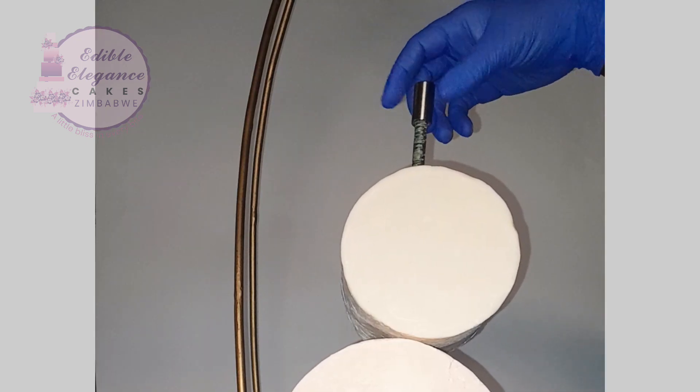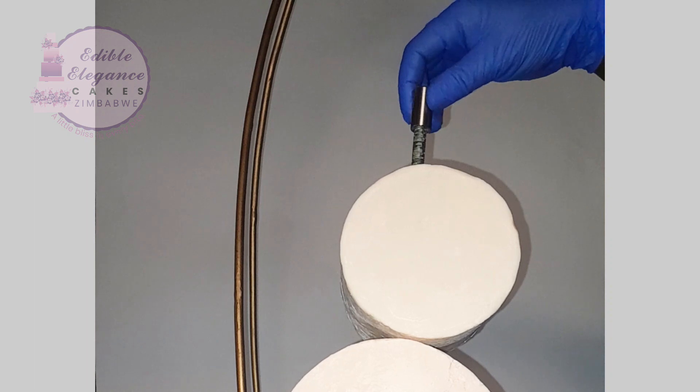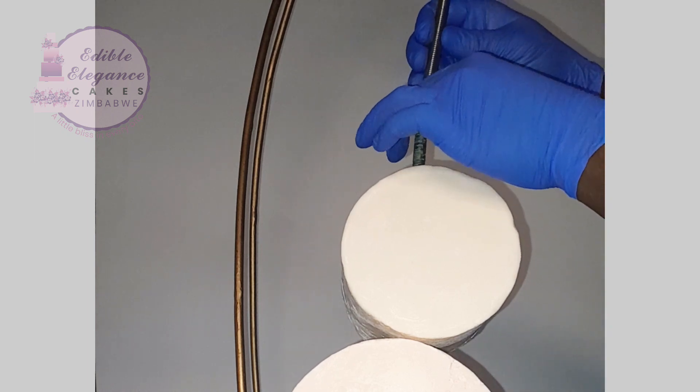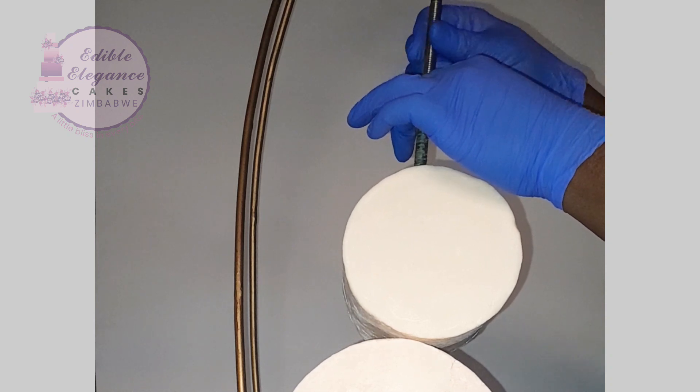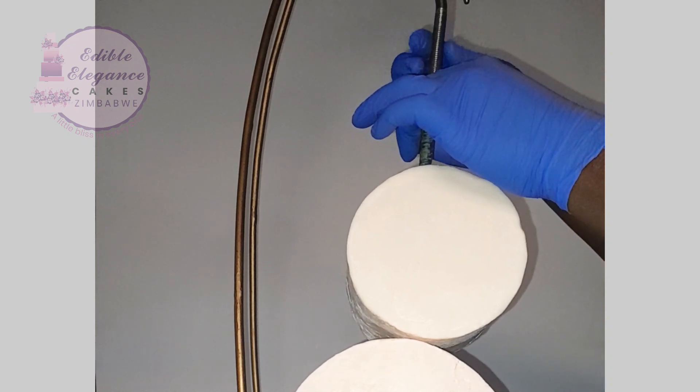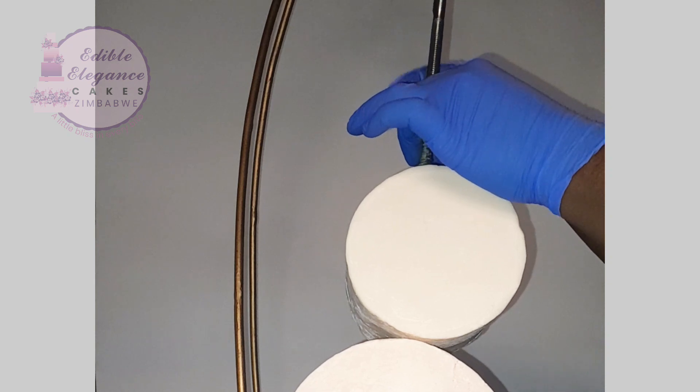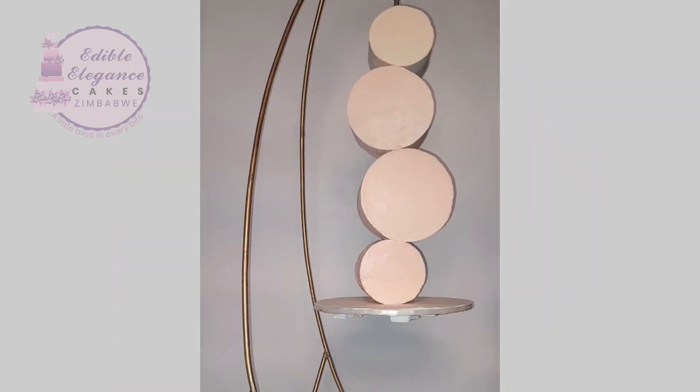So measure your rod in such a manner that the top part does not protrude like mine here. I allowed it to protrude because I had an intention to turn it into a hanging cake. Initially I wanted to just do the hanging part only. I then decided to do the fifth sitting part first so that we just clarify all the issues that needed to be clarified.